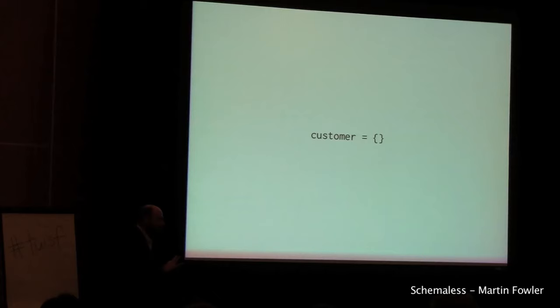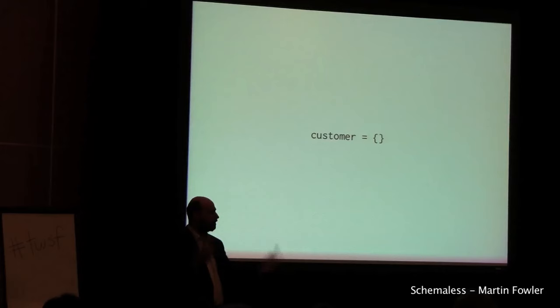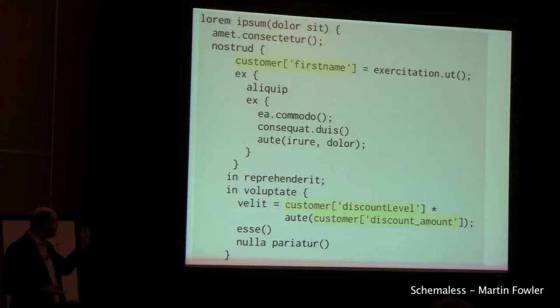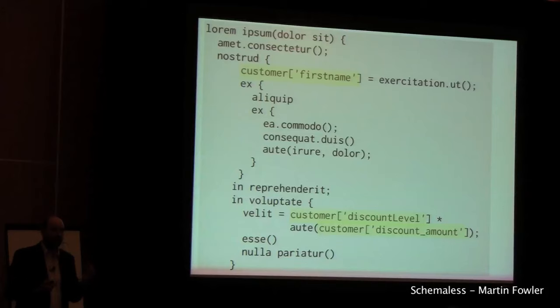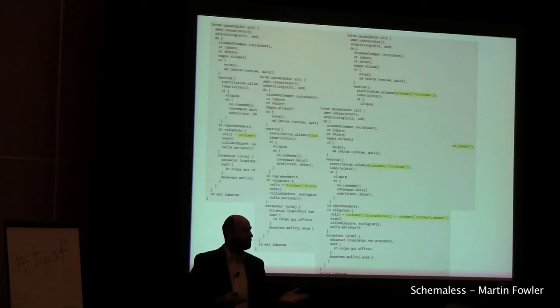There's one really dominant thing that drives this whole thought process. Let's imagine I want to manipulate some customer record and I'm going to be schemaless and treat it as a hash map. I've got lots of this stuff out there and I want to get some information out of it. How do I find out what information is present in that hash map? The only way is to go into the code and look for all the places where that hash map gets manipulated and see what the keys are. This is the problem with the implicit schema — there is going to be a schema, there's always a schema, but it can be rather hard to find.